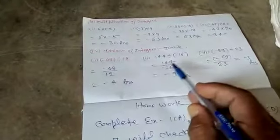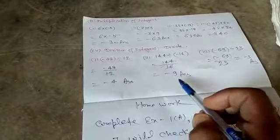Second. 144 divided by minus 16. Equal to 144 upon minus 16. That is equal to minus 9.